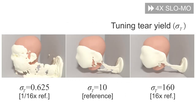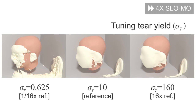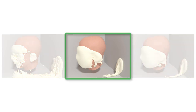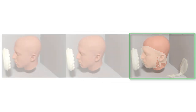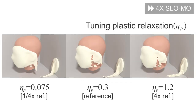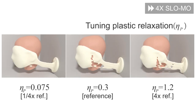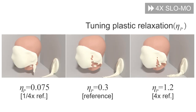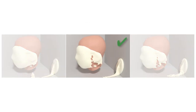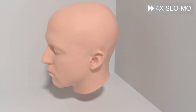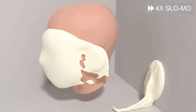With a high tear yield, the material tends to stick to itself, while with a low tear yield, the material can more easily tear, allowing for a brittle-looking fracture. With a high plastic relaxation, the material easily tears, while with a low plastic relaxation, the material takes on a stickier appearance. After this parameter tuning cycle, we achieve the desired look for the pie toss, as we show here.